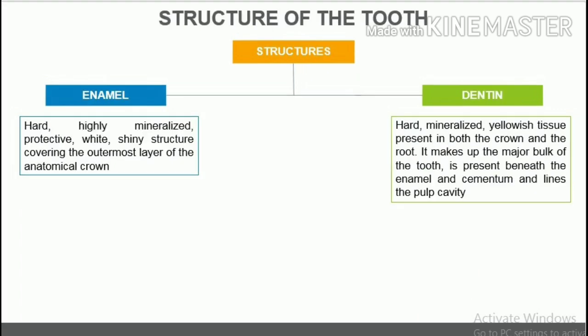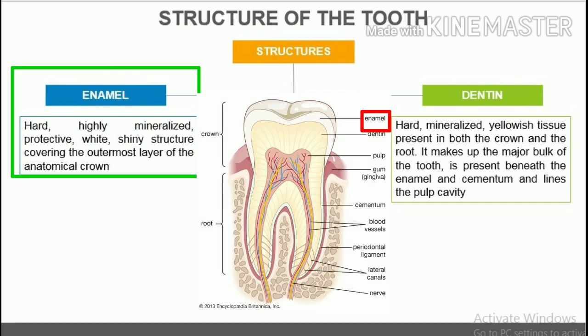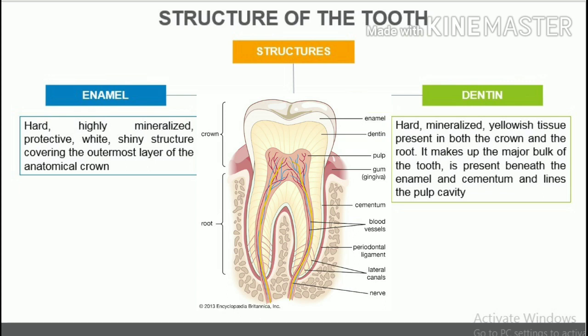Structure of the tooth. The tooth comprises three hard tissue and one soft tissue components. The hard tissue components are enamel, dentin, and cementum. The soft tissue component is the pulp tissue. Enamel is the hard, highly mineralized, protective, white, shiny structure covering the outermost layer of the anatomical crown.